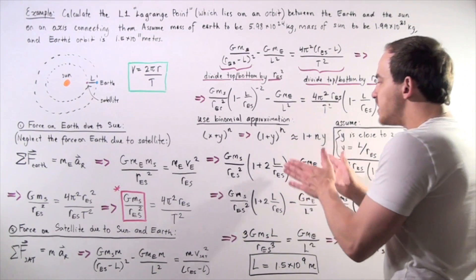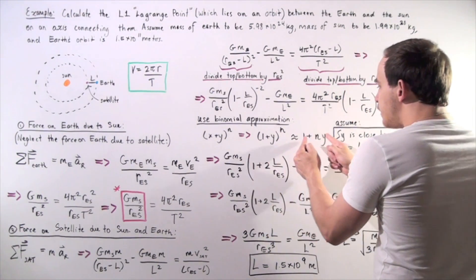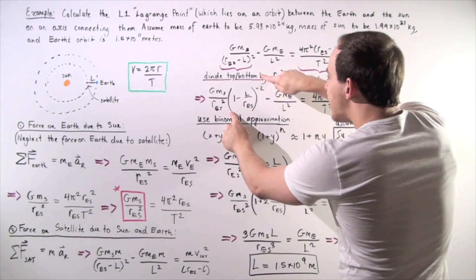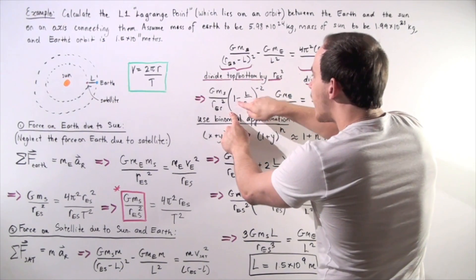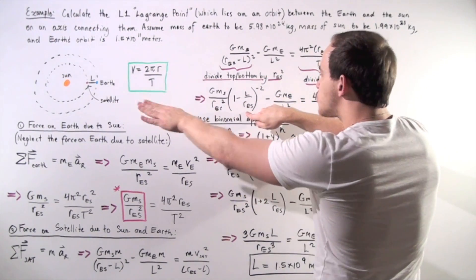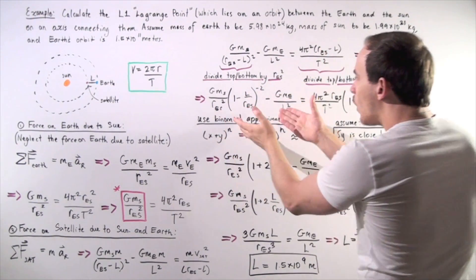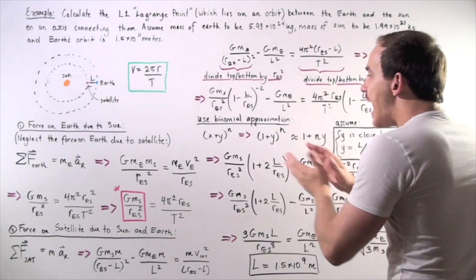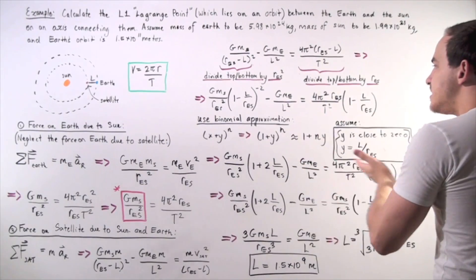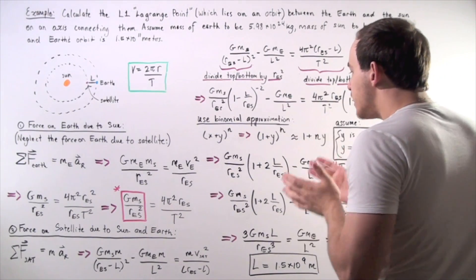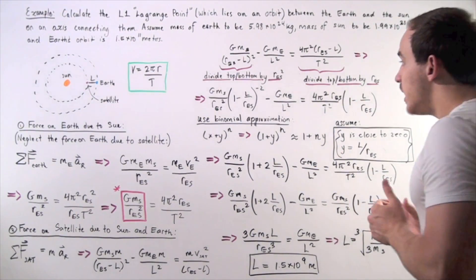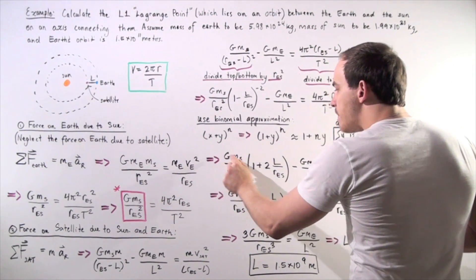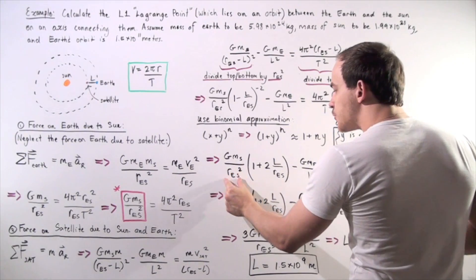So if we set y to be this very small number, we can apply the approximation. This is useful because the term 1 minus L over the radius of the Earth's orbit, raised to the negative 2 power, is a very messy expression. We don't want that — that's why we use this simple binomial approximation. So we rewrite it starting with GM_S divided by the radius of the Earth's orbit squared.